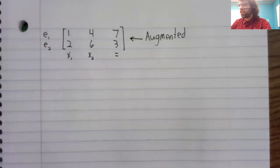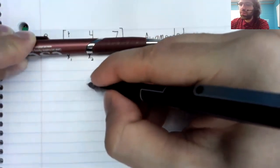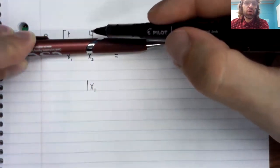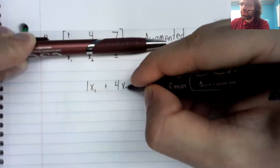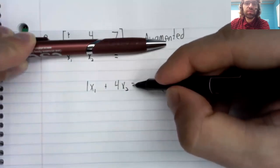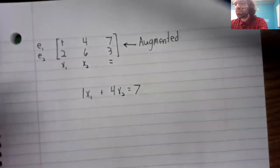So now we just take the first row corresponding to the first equation, and we read across: 1x1 plus 4x2 equals 7. That's the first equation in the system.